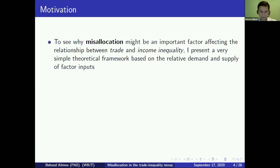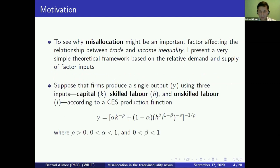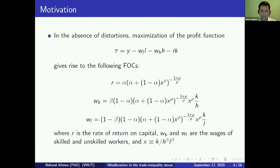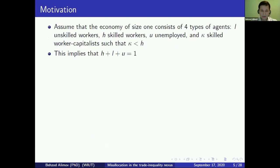To see why misallocation might be an important factor determining how trade affects income inequality, I present a simple theoretical framework. Suppose firms produce a single output using three inputs: capital (K), skilled labor (H), and unskilled labor (L), with a constant elasticity of substitution production function. Firms maximize their profits, where W_L is the wage rate of unskilled, W_H is the wage rate of skilled, and R is the return on capital. Maximization gives rise to first-order conditions, where X is the ratio of capital to the labor aggregate.